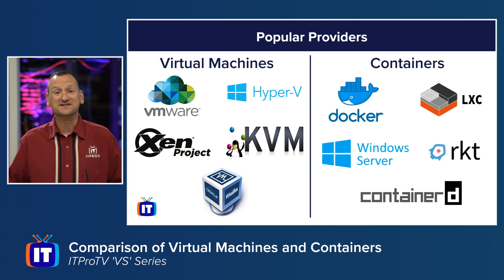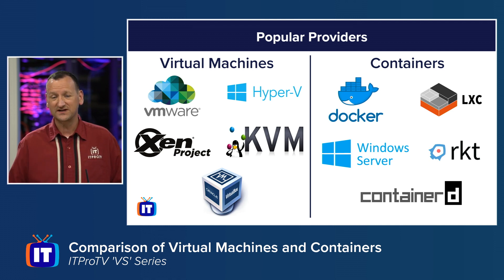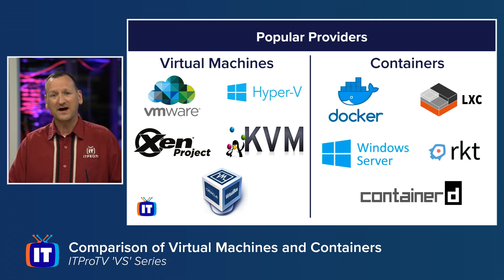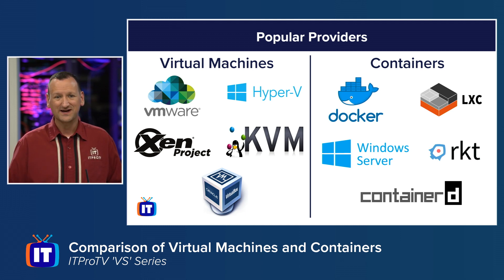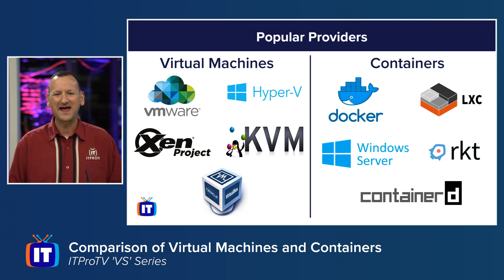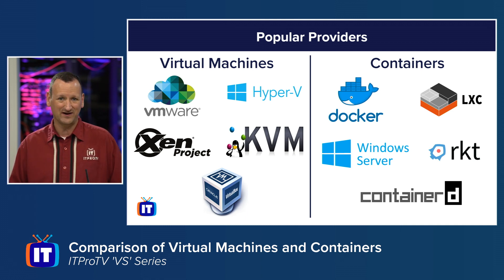Virtual machines and containers can be confusing partly because there are so many players in the space. In the world of virtual machines, we have players like Xen and KVM, the largest open source virtualization platforms. We have VMware's vSphere, Microsoft's Hyper-V, and Oracle's VirtualBox. Over on the container side, we have Docker, who's the undisputable champion right now, but we also have Rocket, LXC, and even Microsoft Windows has their own container platform.